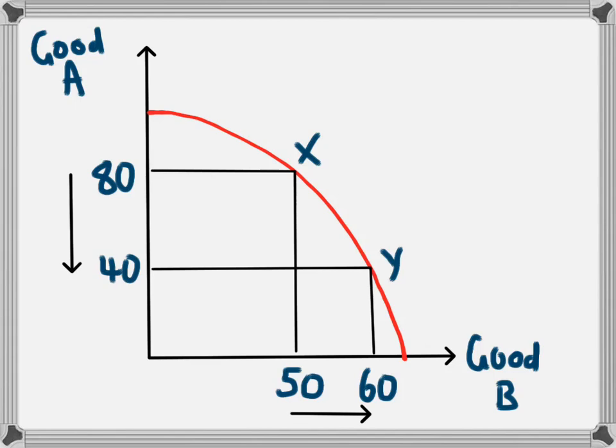So the opportunity cost of moving from point X to point Y and increasing good B from 50 to 60, the opportunity cost of that is 40 of good A.